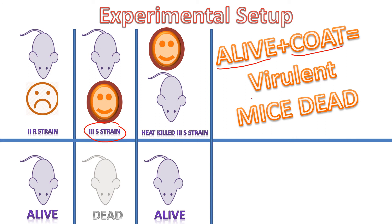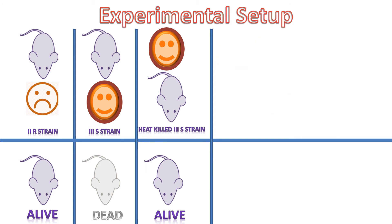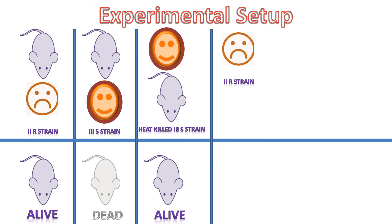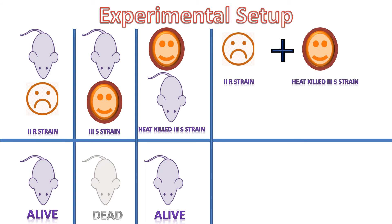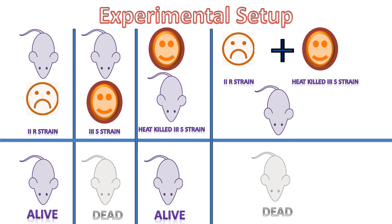In his key experiment, Griffith injected mice with a mixture of living 2R strain and heat-killed 3S strain. He found that the mice died, and from the blood of these dead mice, living 3S strain could be isolated.